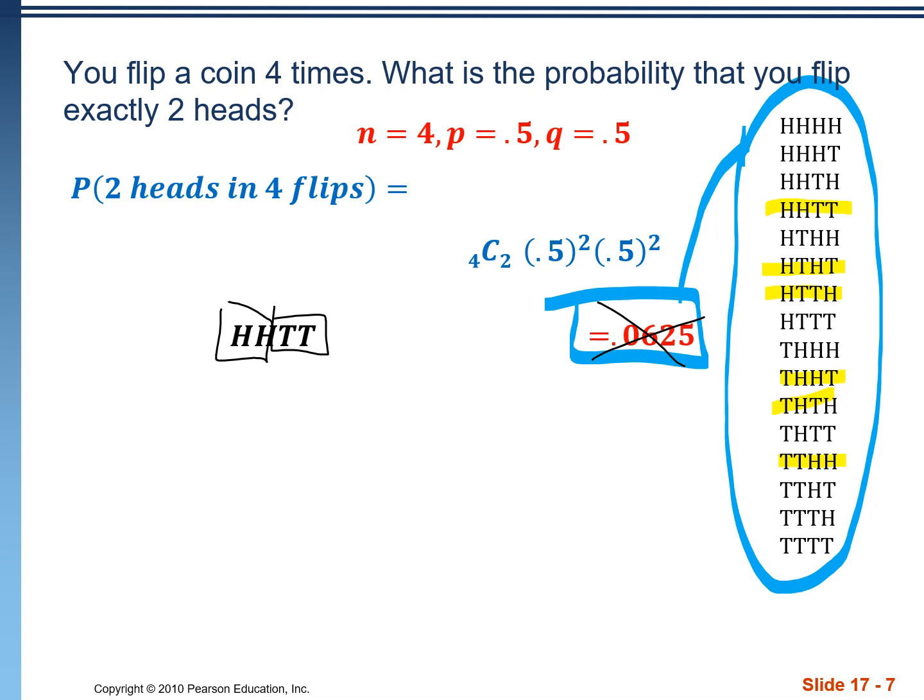The way we would get that six is what just appeared on our screen here, is from the combination. We have four flips. We want two of them to be heads. Four choose two, that's gonna give us six. So six times the probability of a single instance of that occurring gives us our answer 0.375.